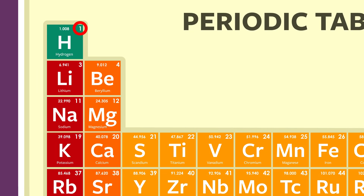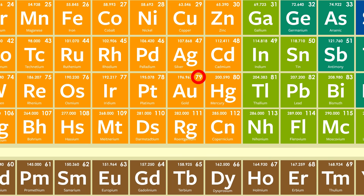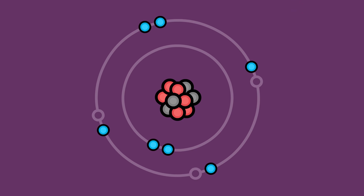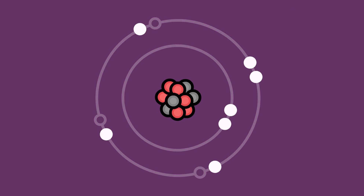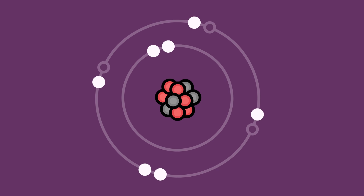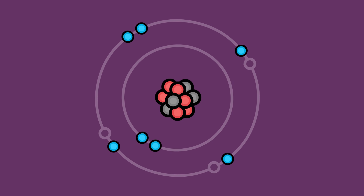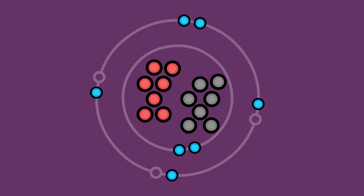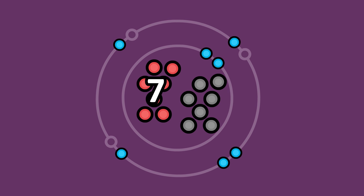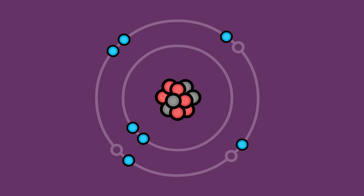Hydrogen has one proton, nitrogen has seven, gold has 79, and so on. Orbiting about the nucleus, we find negatively charged electrons. In general, the number of electrons an atom contains is equal to the number of protons in its nucleus. This is because each positively charged proton attracts one negatively charged electron.